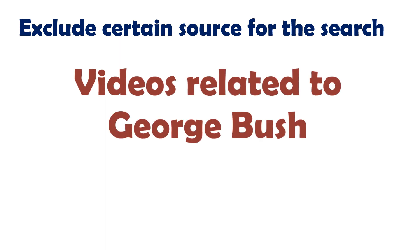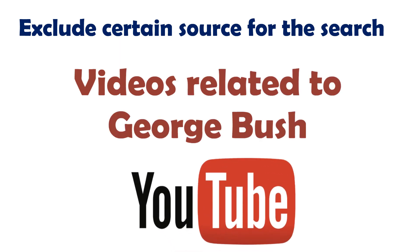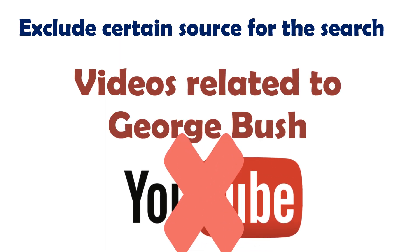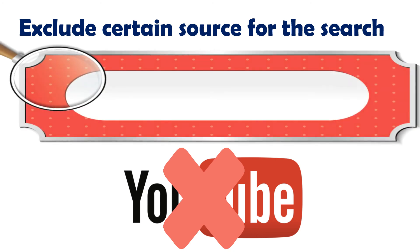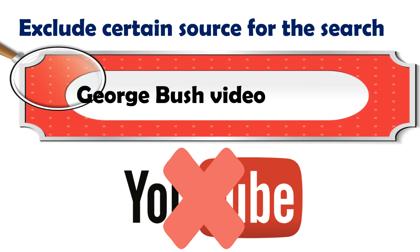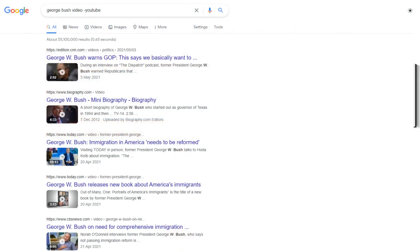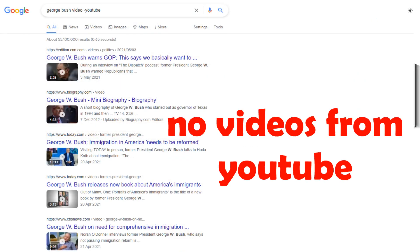You can even exclude a certain source from the search. Let's say you want to look for videos related to George Bush, but you don't want the videos from YouTube. You can type: George Bush video, space, dash YouTube. It will show you results for George Bush's videos except from YouTube.